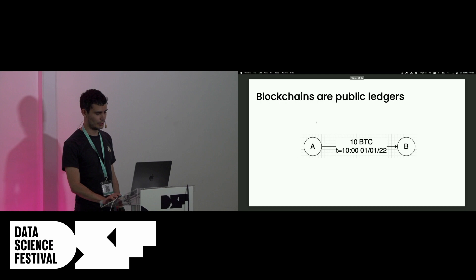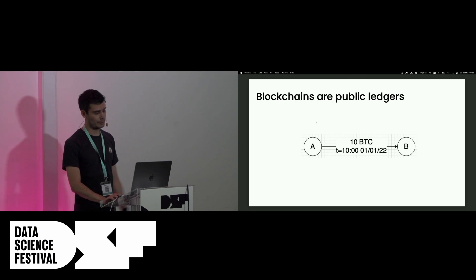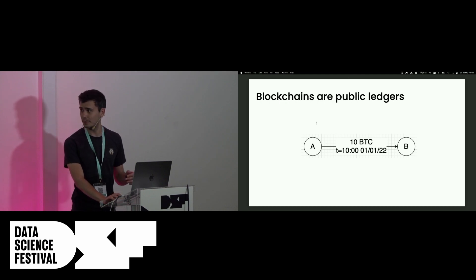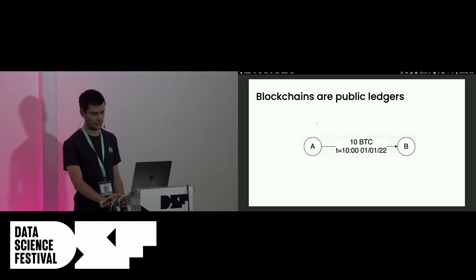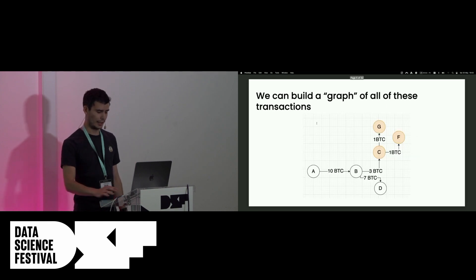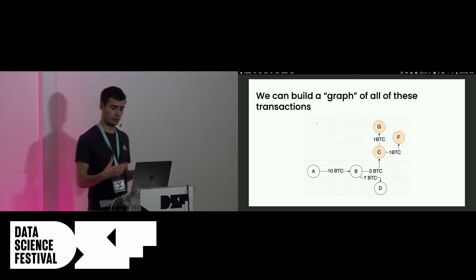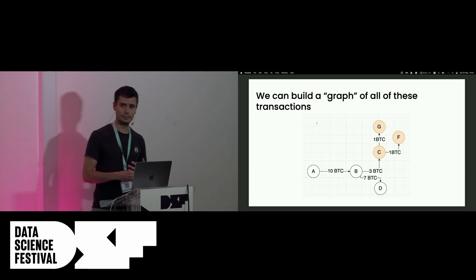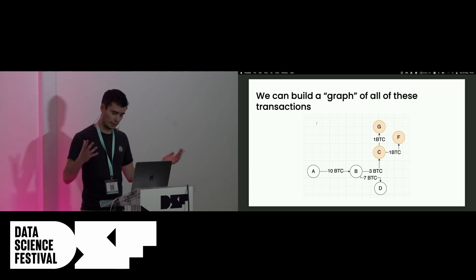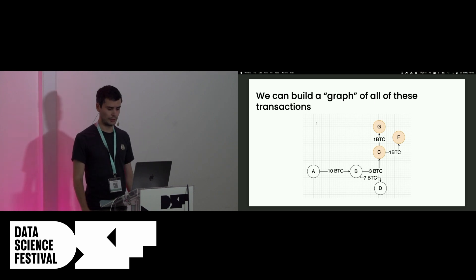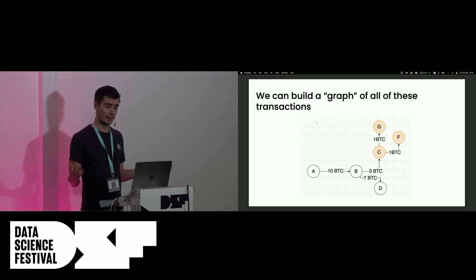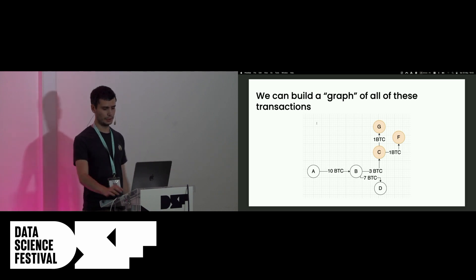So I'll start off — everyone should know that blockchains are public ledgers, so it allows you to send money from A to B, and it records the amount and the time. And all of those transactions build the graph, similar to the last talk I was hearing about. So you have all this data, and it's publicly available, of all these different transactions.